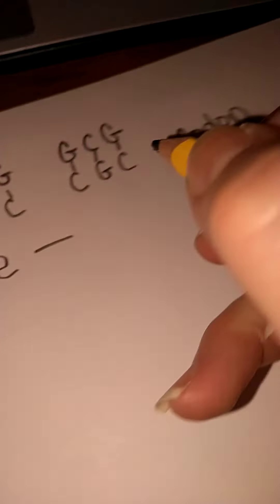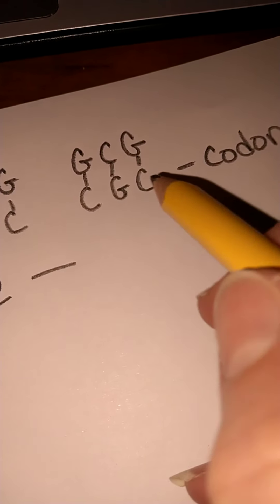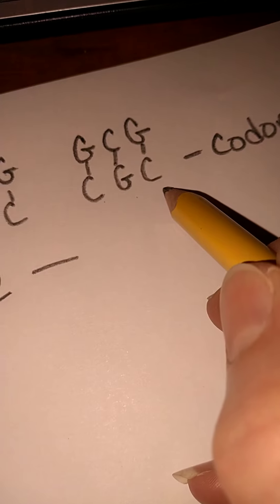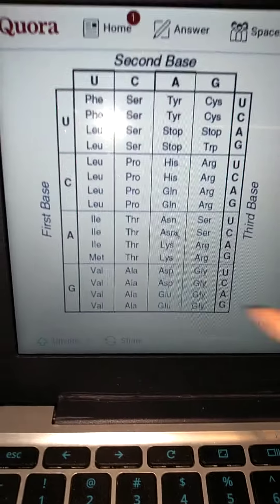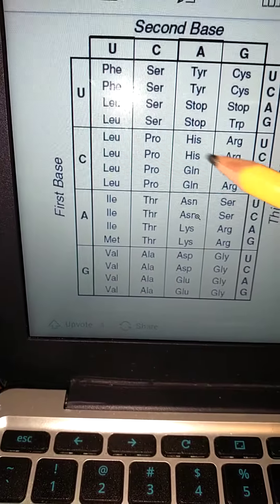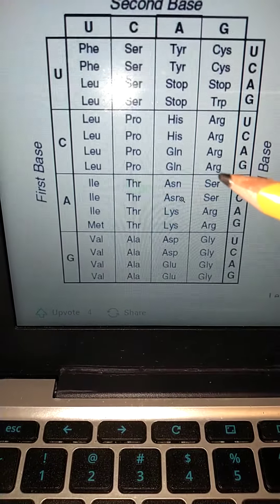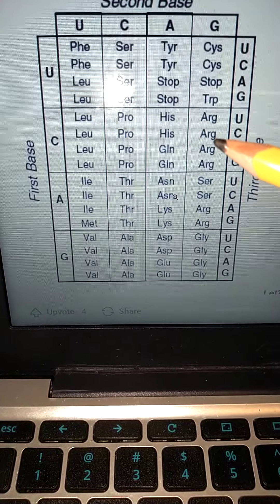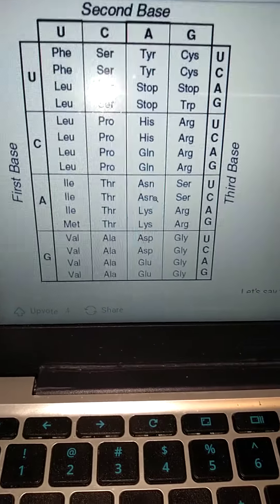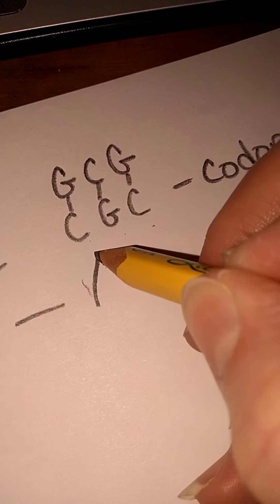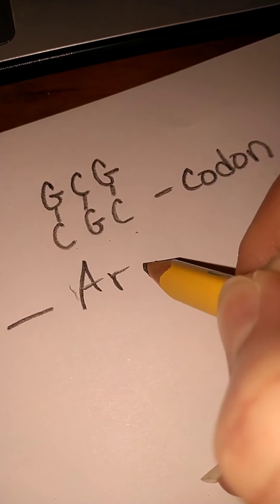And then it's going to be held by a peptide bond to our next one that's coded for by the basis C, G, C. Okay, so we go back to our table. We have C, so it's going to be in this row, and then we had a G, so it's going to be over here in this box, and then G again, so it's, or C again, so it's right here. Arginine will be our next one. So, A, R, G.